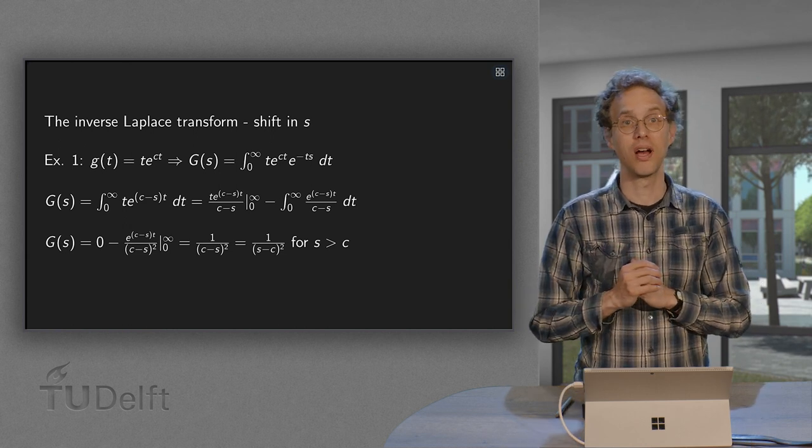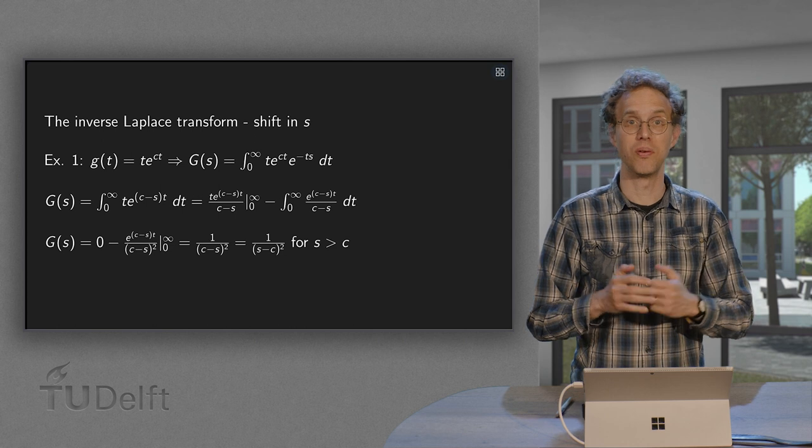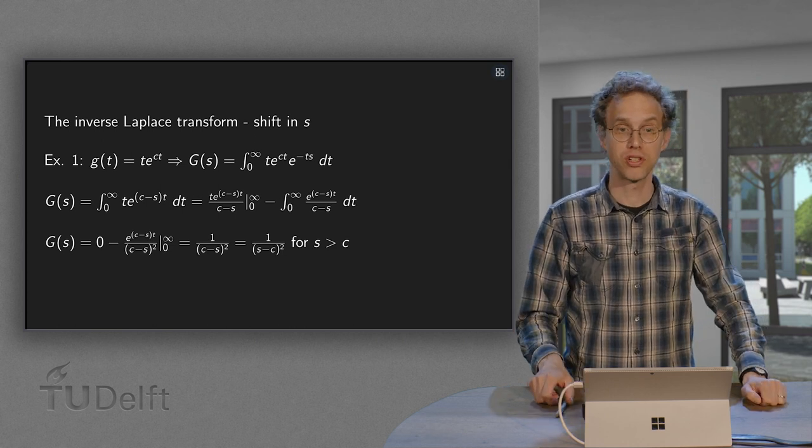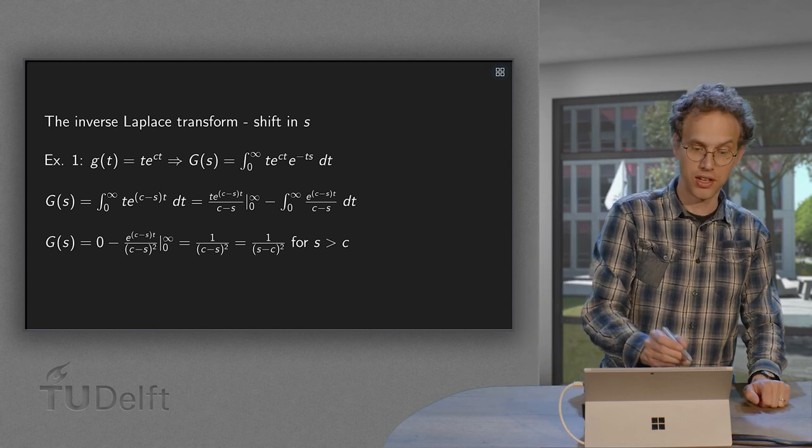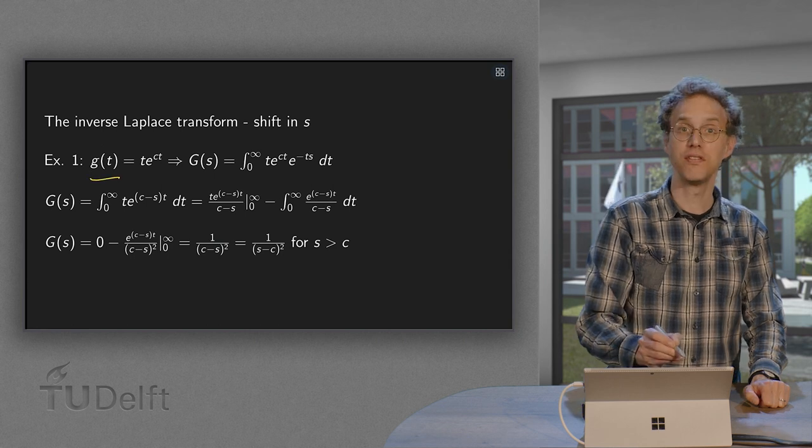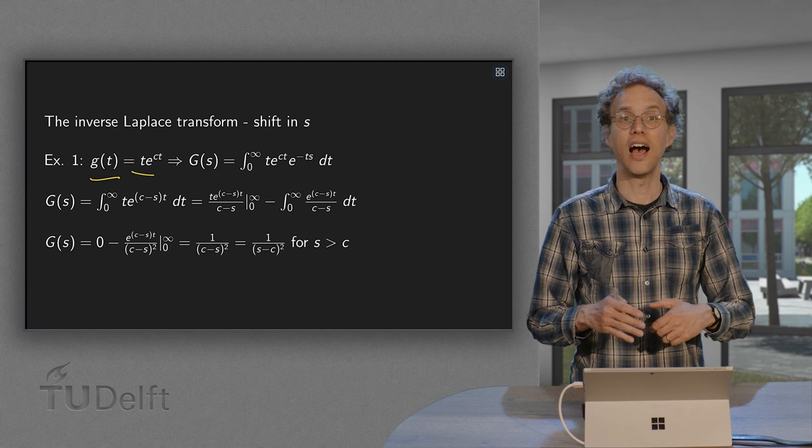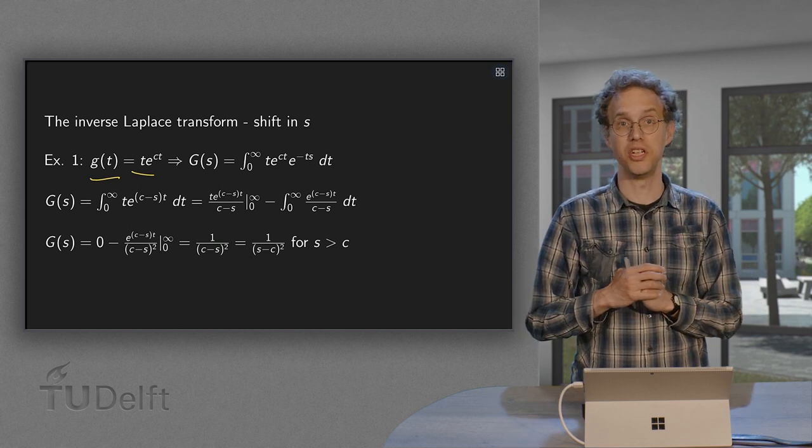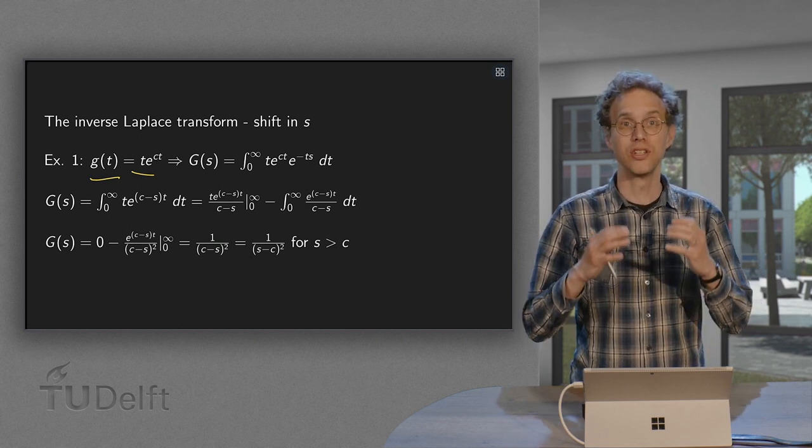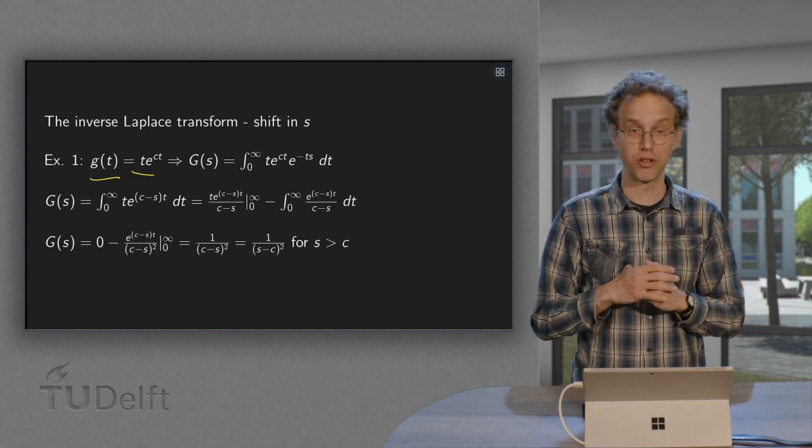Let's take a look at how this works, starting with an example. Let's take G(t) = t·e^(ct). We will compute G(s) in this case, just to get a feel for how this is going to work.